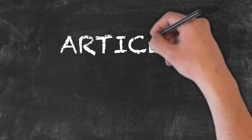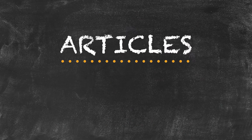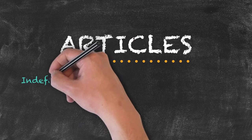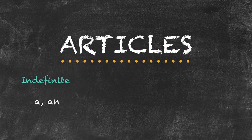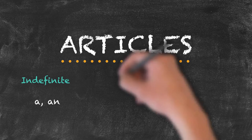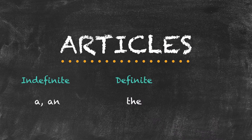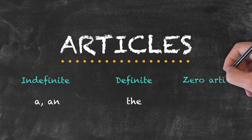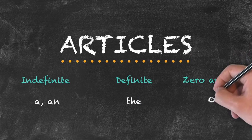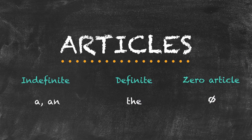Now we'll have a look at our articles. We can divide articles into these groupings: indefinite, using 'a' or 'an'; definite, using 'the'; and oftentimes referred to as the zero article, which is actually the absence of an article altogether.